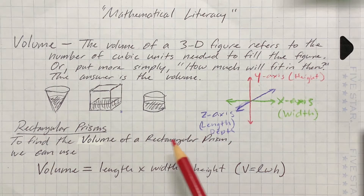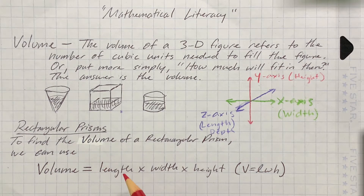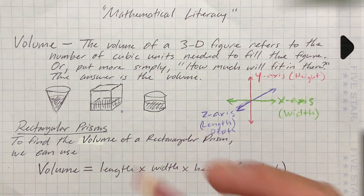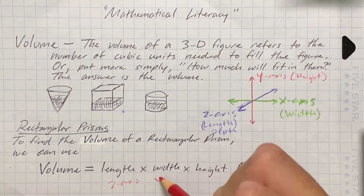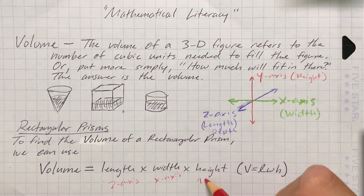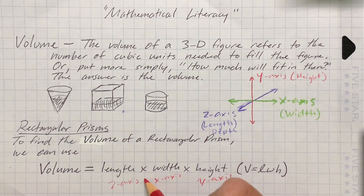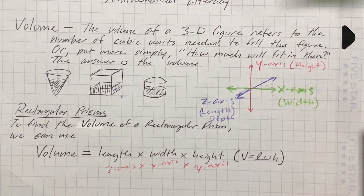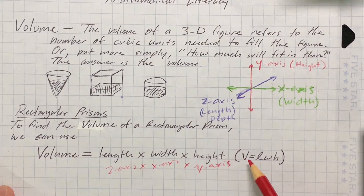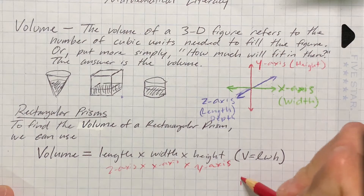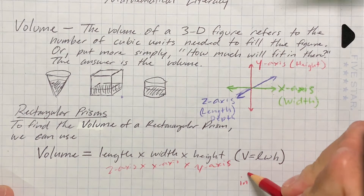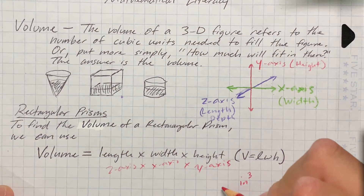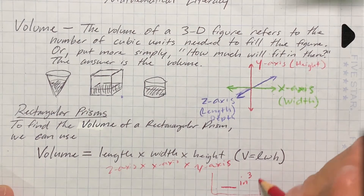To find the volume of a rectangular prism, we use this formula: Volume equals the length (z-axis) times the width (x-axis) times the height (y-axis). You multiply those measurements together to get the volume. Don't forget — because it's three-dimensional, you have to put an exponent of 3 on whatever unit you have for the volume, for example, inches cubed.